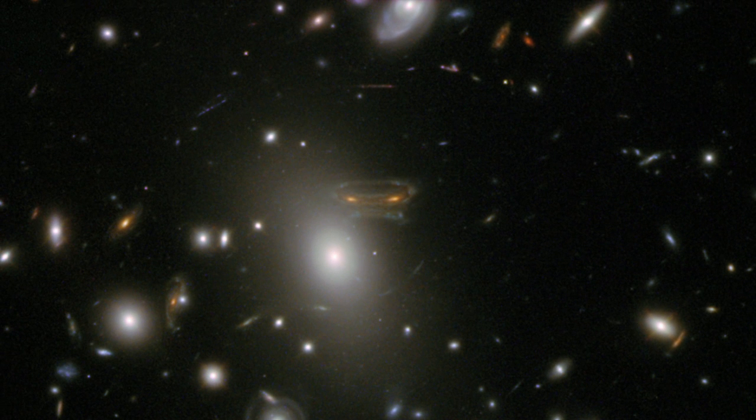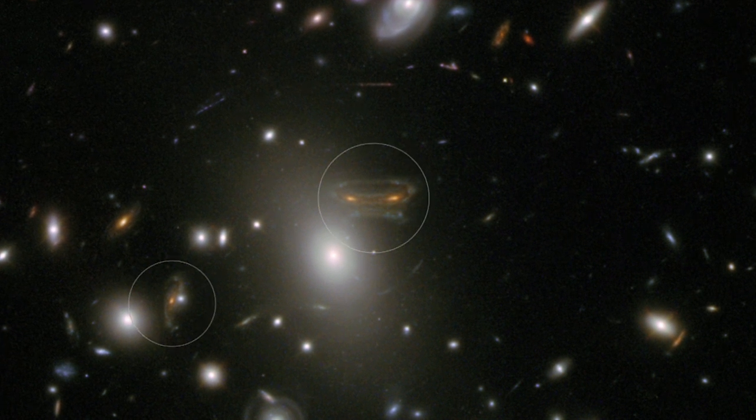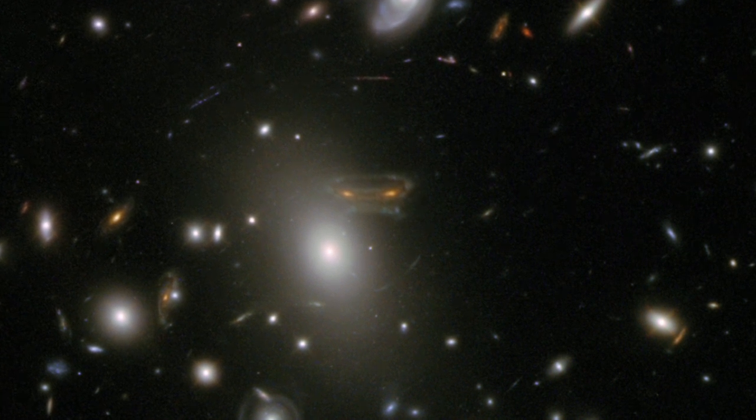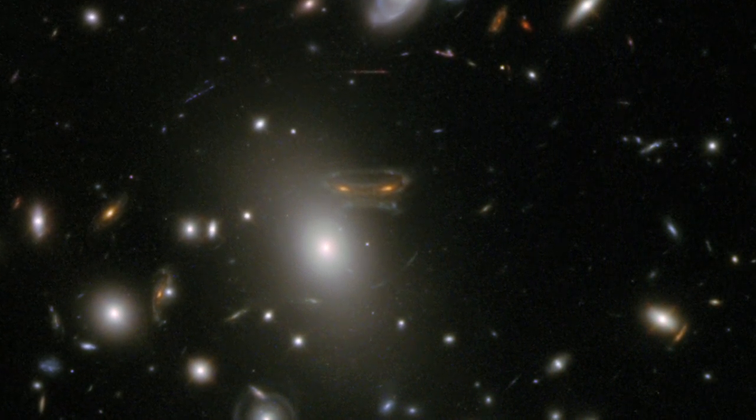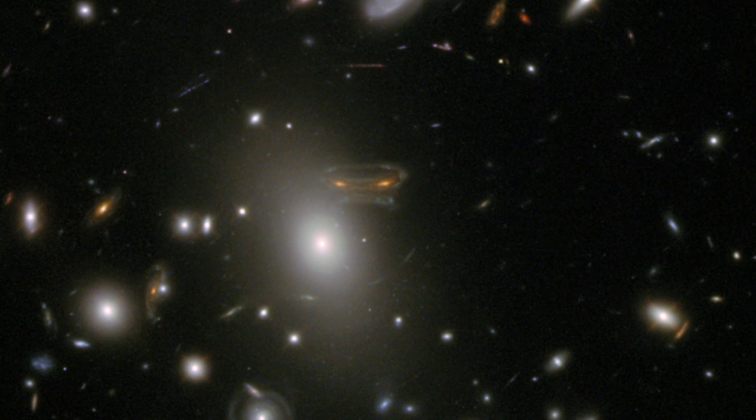This deformed galaxy is actually visible twice, as its light is following two separate paths around a nearer elliptical galaxy before reaching us.